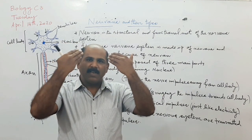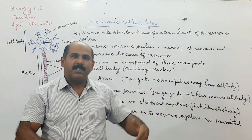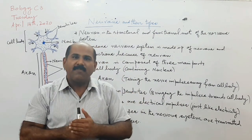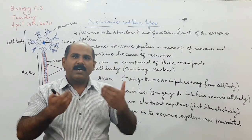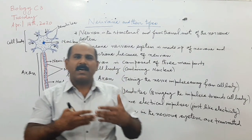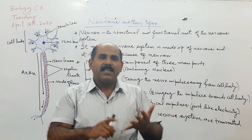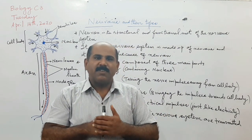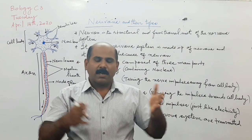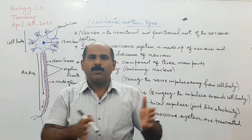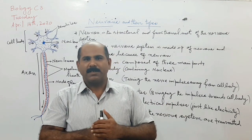For example, if there is something in the brain and the message has to be transferred to our feet, that will happen through nerve impulses. So nerve impulses are electrical signals responsible for transmitting messages from one part of the nervous system to another part.